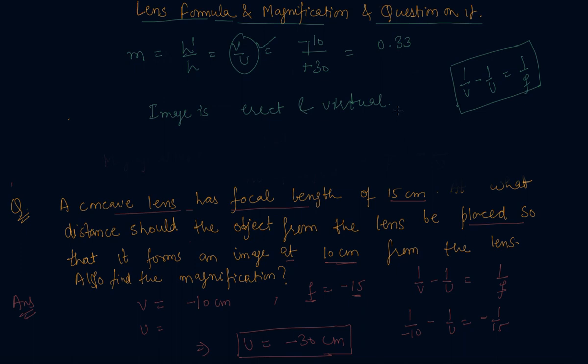For the magnification formula, there is a small change. It is minus V by U in case of the mirrors, but it is V by U in case of lenses. So the difference is of minus and plus in lens and mirror respectively.